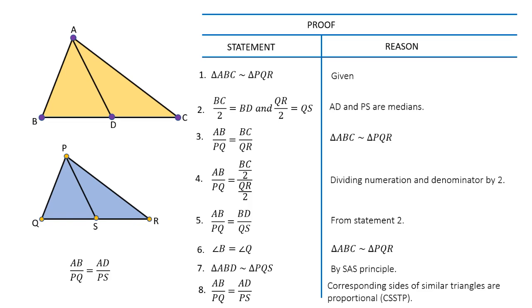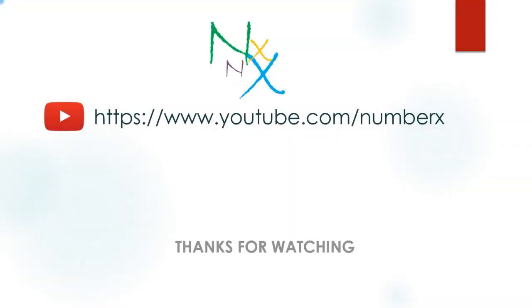Hence, AB over PQ is equal to AD over PS. This proves our statement. So by the end of this, we have finished this lecture.